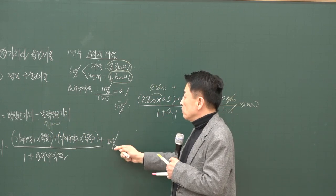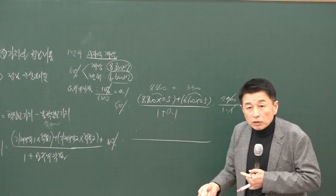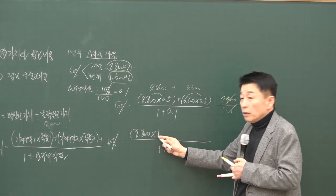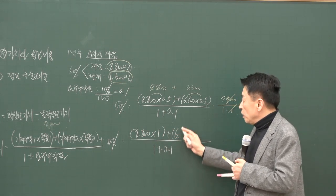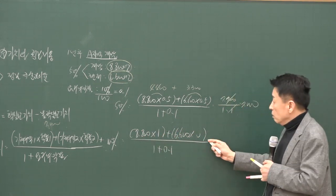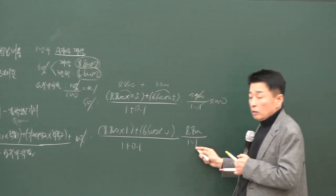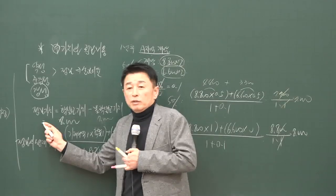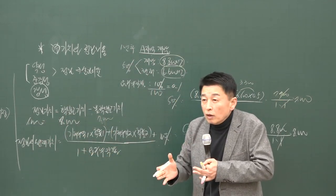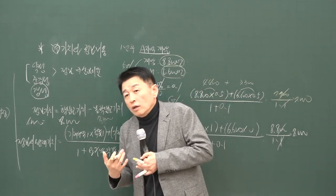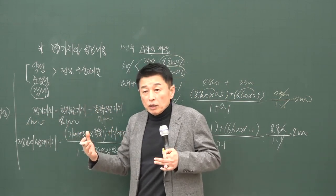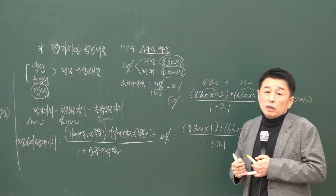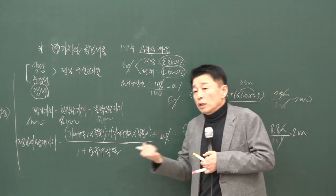만약 100% 확률이라고 가정하면 계산이 더 간단해집니다. 1 + 0.1 = 1.1이고, 8,800이 될 확률이 100%이므로 6,600이 될 확률은 0입니다. 그러면 8,800 ÷ 1.1 = 8,000만 원이 정보가 확실할 때의 가치가 됩니다. 정보 가치는 8,000 - 7,000 = 1,000만 원이에요. 1,000만 원보다 적은 비용을 지출해서 거래가 성사되면 초과이윤을 얻을 수 있지만, 정보 비용이 1,000만 원이라면 초과이윤을 기대하기 어렵습니다.